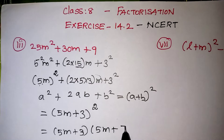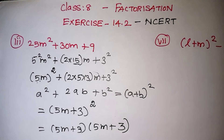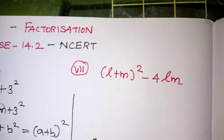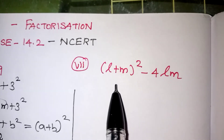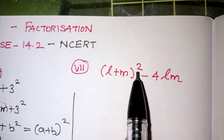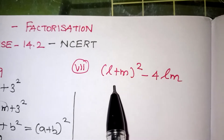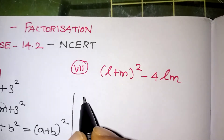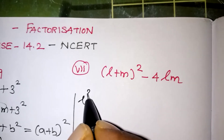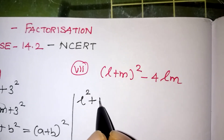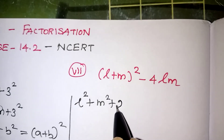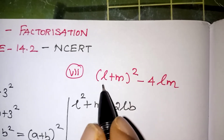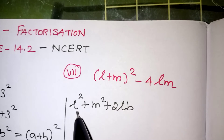Now I am telling you one more shortcut for the same type of problem. Here (l + m) the whole squared is given. Using the formula, a plus b the whole squared can be written as a squared plus b squared plus 2 into a into b.